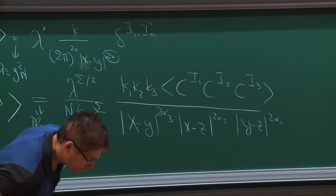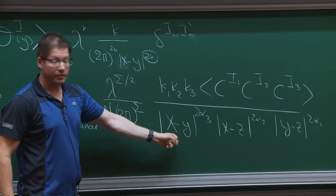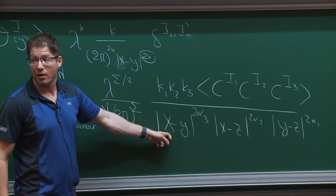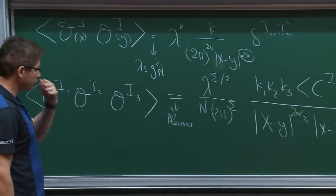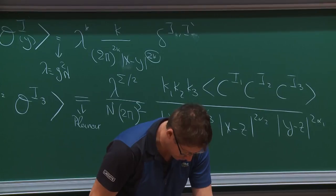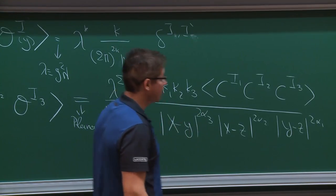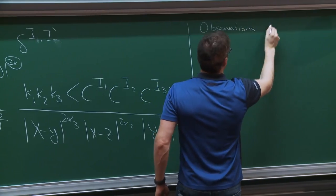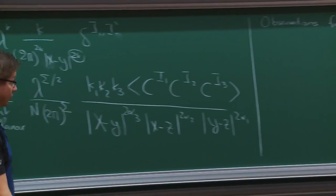A few comments. First, the spacetime dependence is not surprising — this is the general dependence on the coordinates of any three-point function of primary operators in any conformal field theory. And now there are these pre-factors. What was observed in 1998 is the following, and that's where it becomes a little bit more mysterious. So far we just discussed free field theory, so there was nothing mysterious about it. Sigma is the sum of the k's: σ = k1 + k2 + k3.